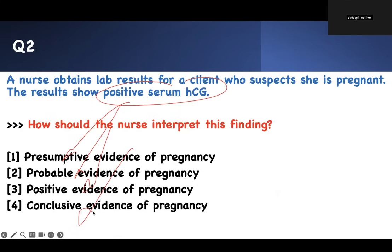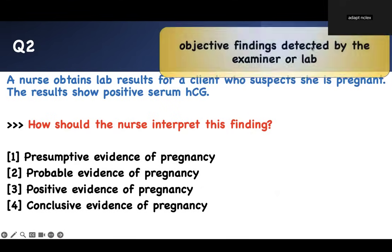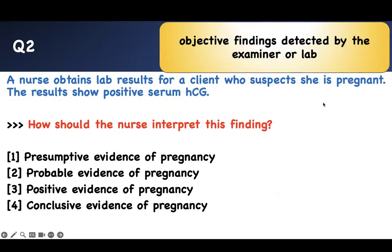Think of it like vital signs. When we take your vitals, we're taking an objective value. When you're speaking to us, that is a subjective value. When we use imaging like X-ray, CT scan, and other things, we are referring to positive evidence. This is a lab work, so the concept is: if you take a lab work or the doctor examines you, that is an objective value — and that objective value is a probable evidence of pregnancy. If the mommy is talking, that is presumptive. If the doctor uses imaging like CT scan or ultrasound to look for the baby, that's a positive sign. Therefore, beta-hCG is a probable sign.